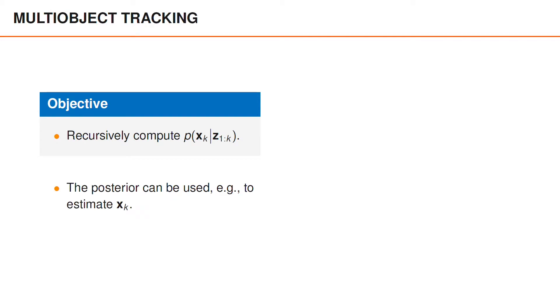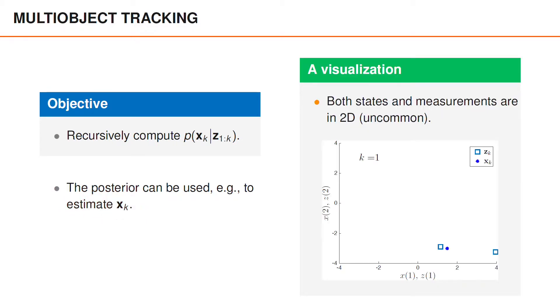The posterior distribution can be used for several purposes, and a common example is to estimate the set of objects. To visualize the state and measurement sequences, we consider a toy example where both the states and the measurements are two-dimensional vectors. As I've mentioned on this slide, it is actually rather uncommon that states and measurements are two-dimensional, but we focus on such examples here since they are simple to visualize.